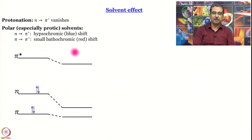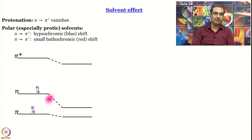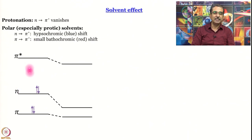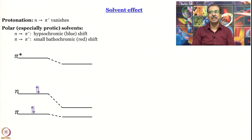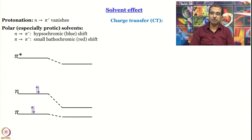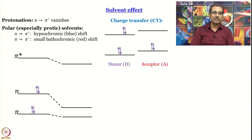The π* level is also stabilized to a greater extent than π because it is more delocalized, but not as much as the n level. These stabilizations are not to scale and are grossly overemphasized in the diagram. In a polar solvent the n→π* energy gap becomes larger than in a non-polar solvent, hence the hypsochromic (blue) shift. The π→π* transition shows a small bathochromic shift because π* is stabilized more than π.